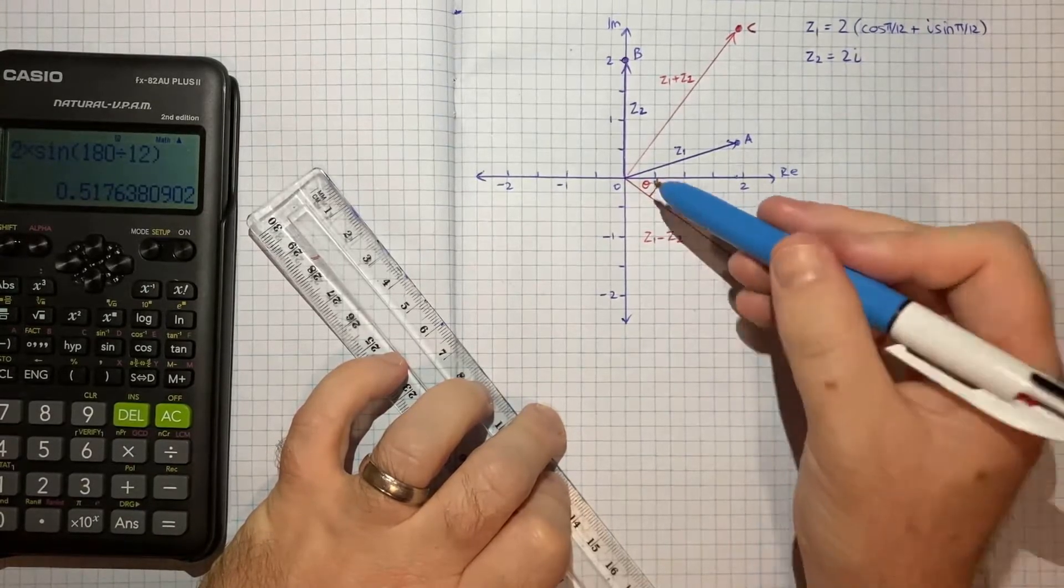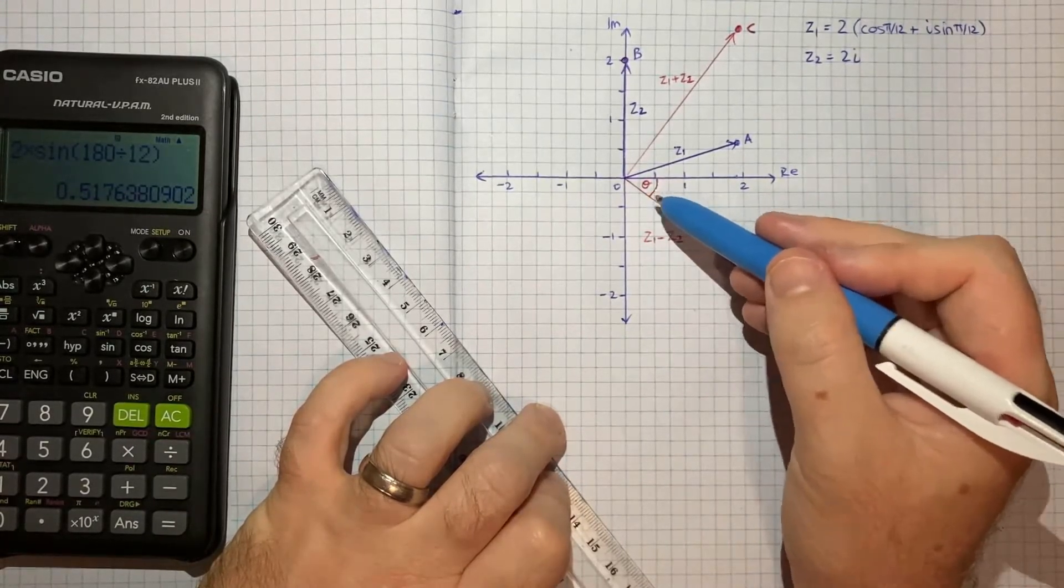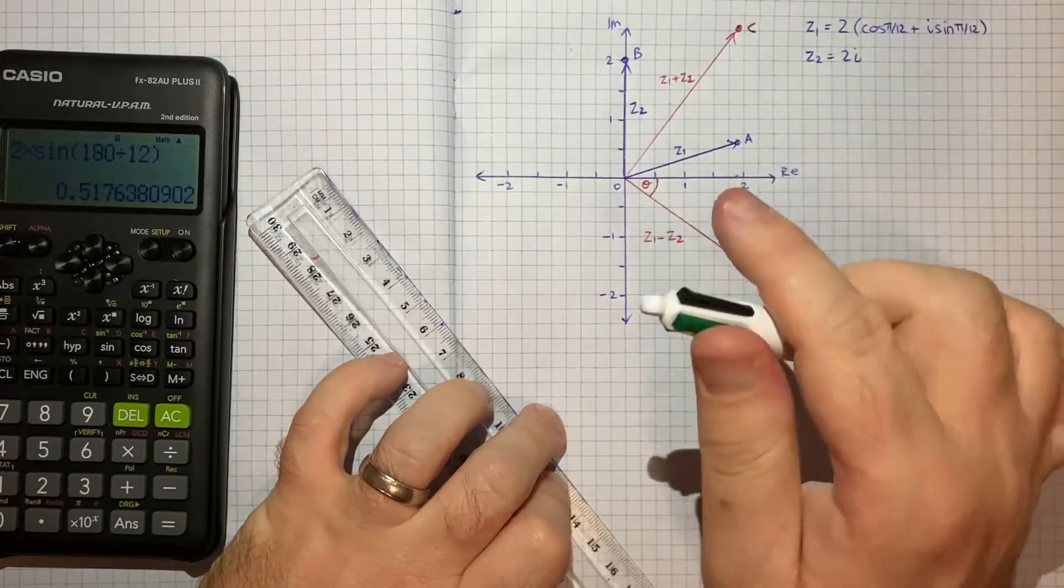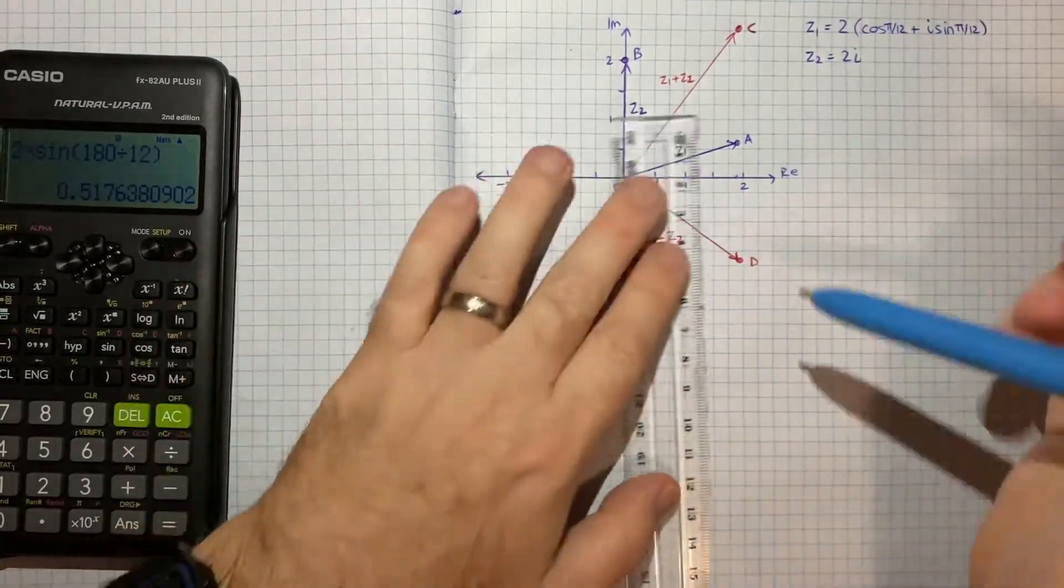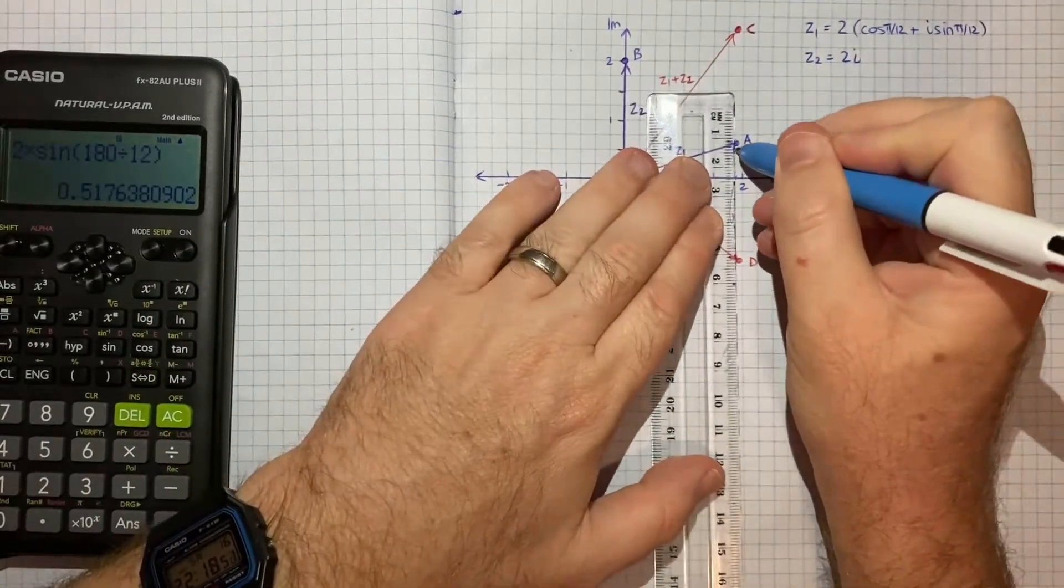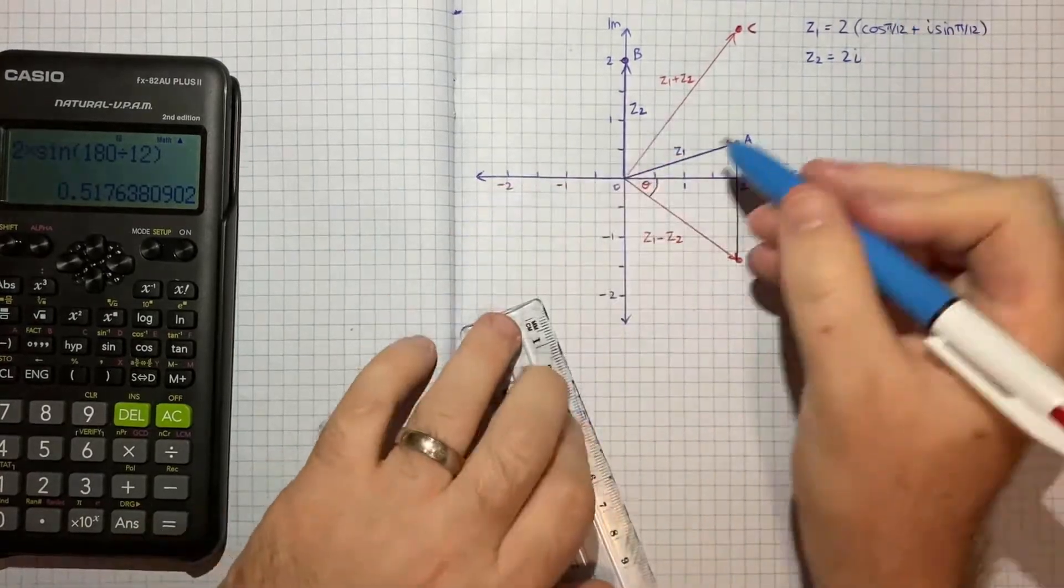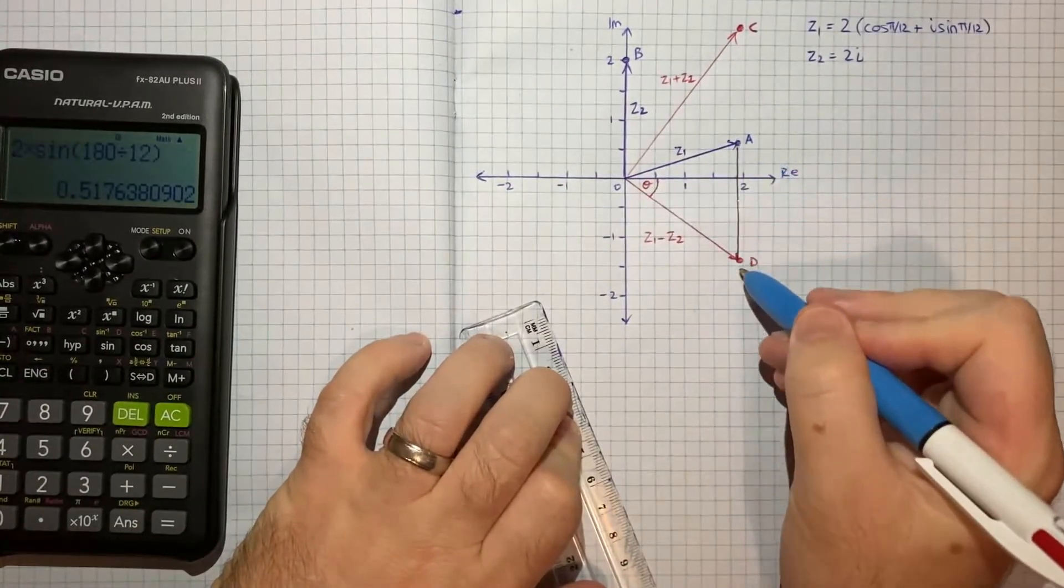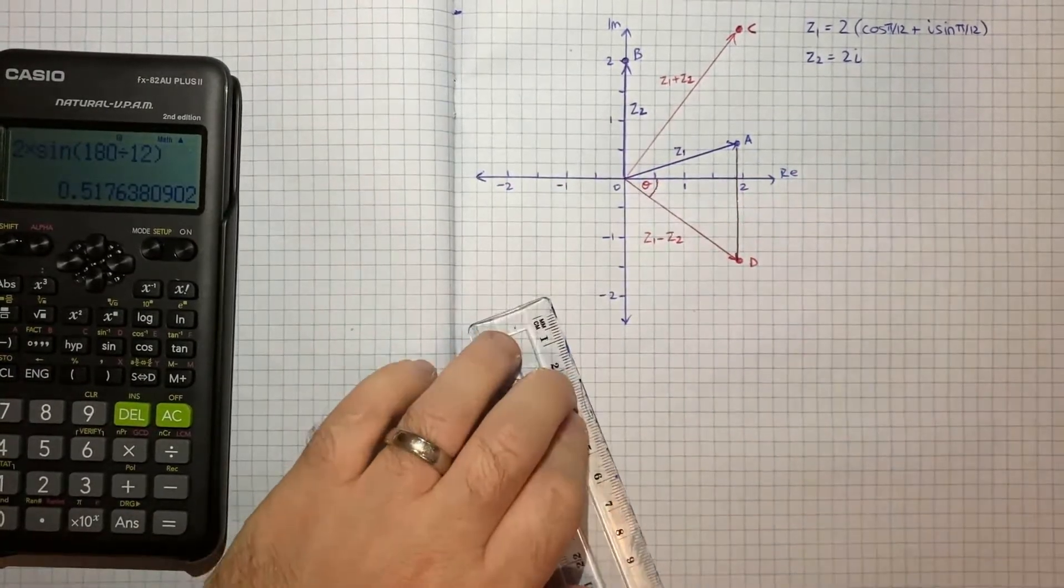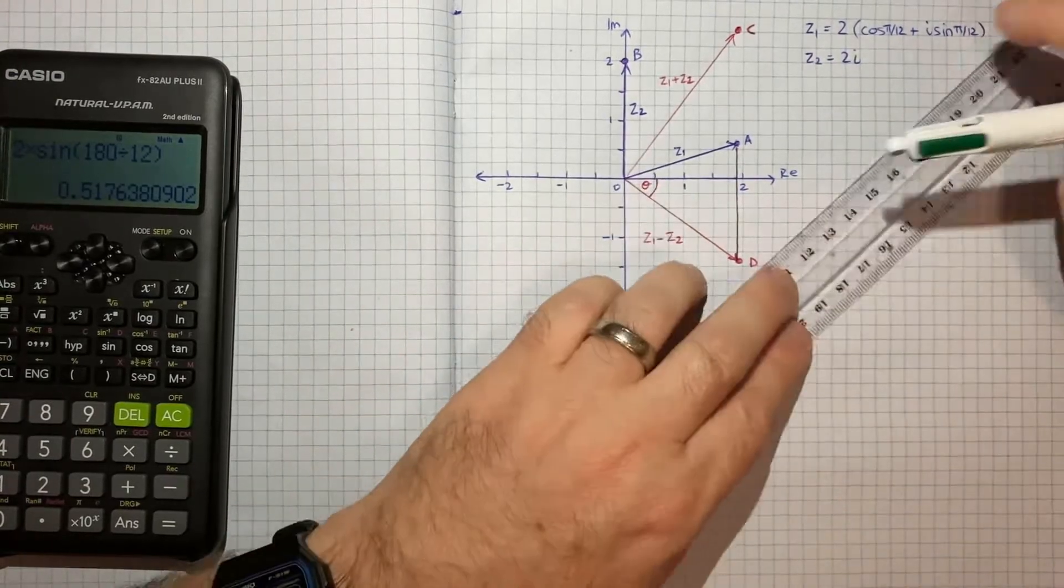Now, the way we can find this angle, I think the simplest way is to make use of, essentially, this triangle that is formed between points O, A, and D. Maybe what I'll do is I'll draw up a clean version over here, just so that we can annotate onto it.